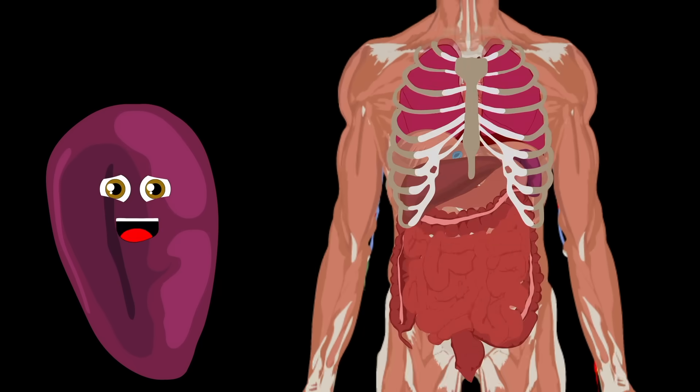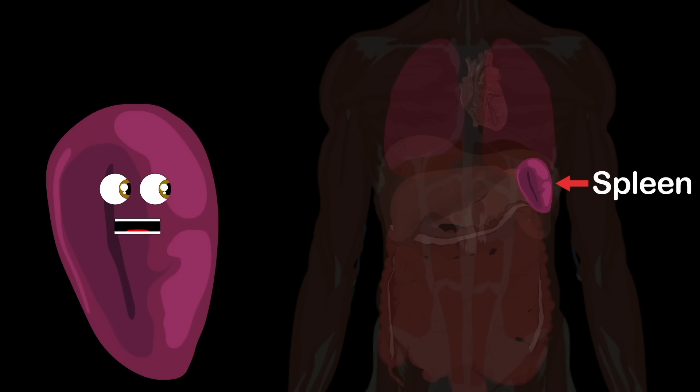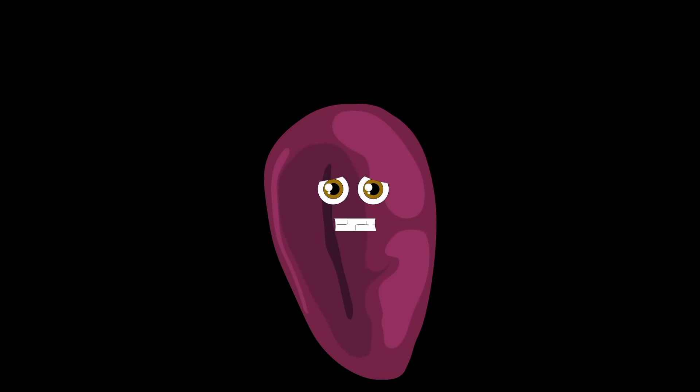The spleen is located under the ribcage above the stomach, here in the upper left quadrant of the abdomen — the space I share.